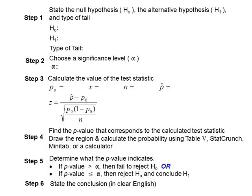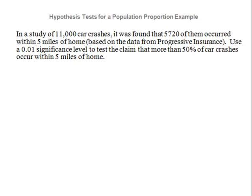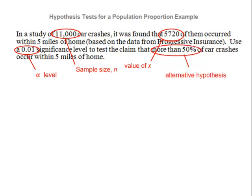Let's do an example using this outline. In a study of 11,000 car crashes, it was found that 5,720 of them occurred within 5 miles of home, based upon data from Progressive Insurance. Use a 0.01 significance level to test the claim that more than 50% of car crashes occur within 5 miles of home. The 11,000 is our sample size, 5,720 is x, alpha is 0.01, and the claim — more than 50% of car crashes — is the alternative hypothesis.